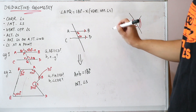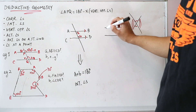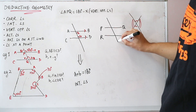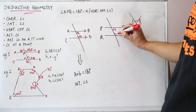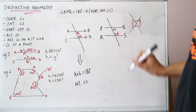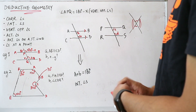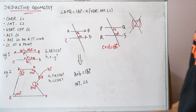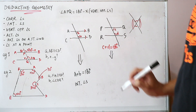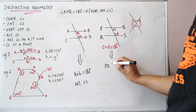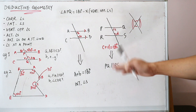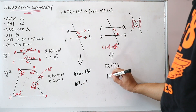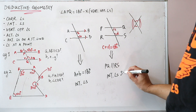On the contrary, if you're given two lines PQ and RS with a transversal, and the question tells you that C plus D equals 180 degrees, then you can conclude that PQ is parallel to RS. The reason is interior angles supplementary.